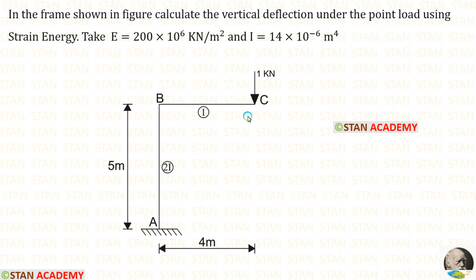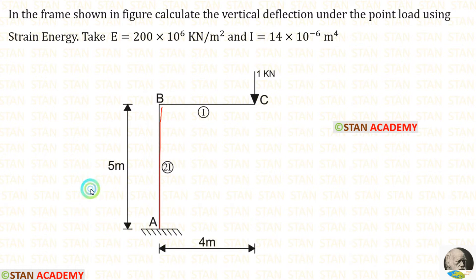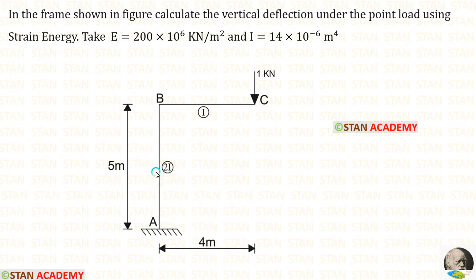In this frame, we have to calculate the deflection under the point load of 1 kN. The height of portion AB is equal to 5 m. The length of BC is equal to 4 m. The moment of inertia for AB is equal to 2I, and the moment of inertia for BC is equal to I.